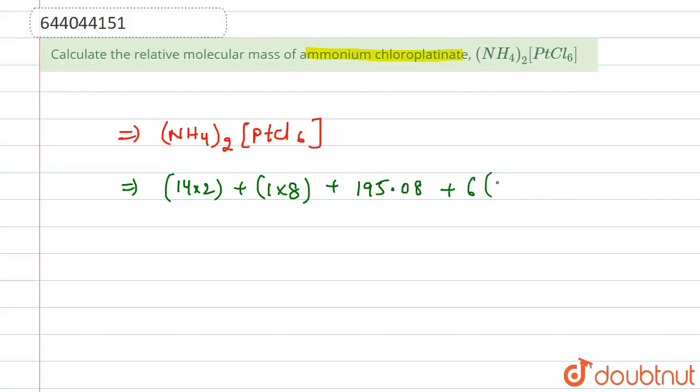Plus six chlorine, so chlorine's molecular weight is 35.5, so 35.5 times 6. Now if we calculate this total, this is actually equals to 28 plus 8 plus 195.08.